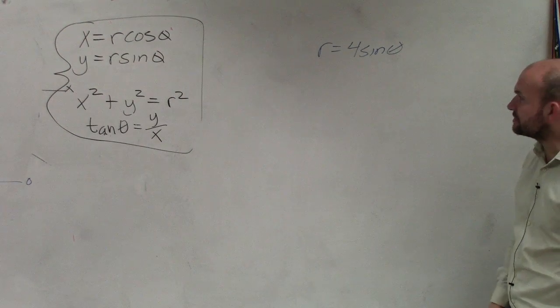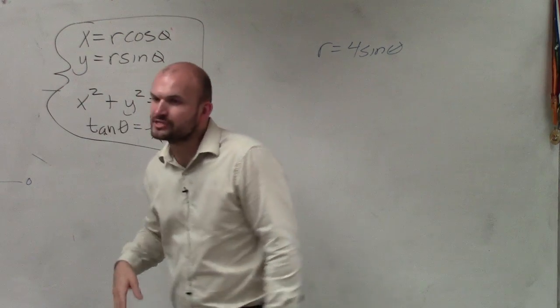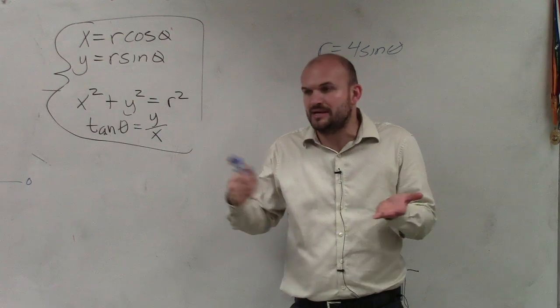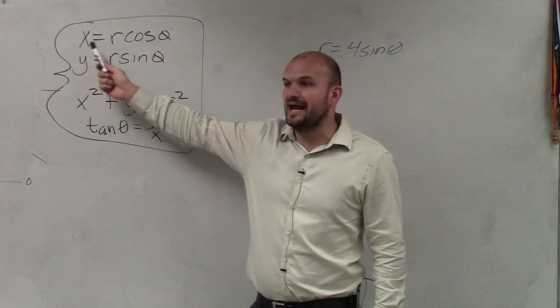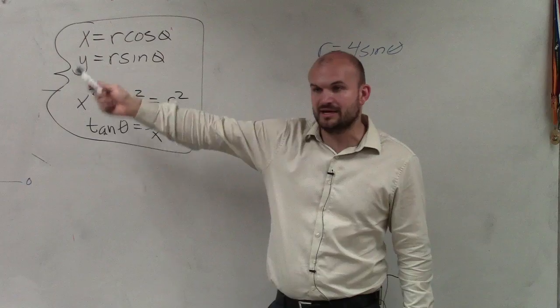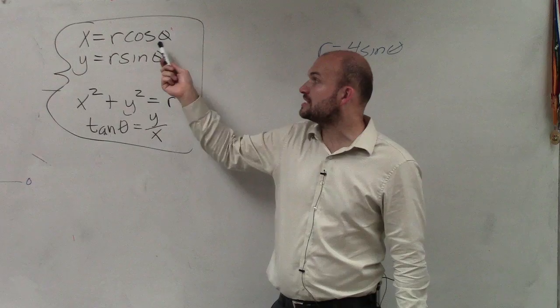If I want to convert this, here are the rules that we have established so far that we understand the difference between rectangular and polar. You should understand that x equals r cosine theta. When we look at the graph, we make the triangle. You should understand x equals r cosine theta.